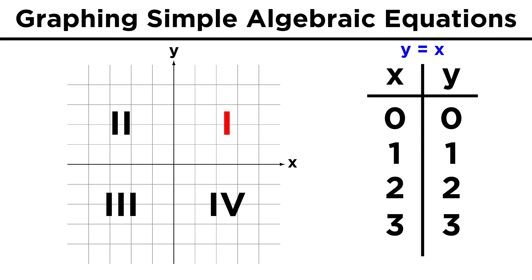Those are quadrants one, two, three, and four, represented by Roman numerals. By convention, the x-axis is horizontal and the y-axis is vertical.